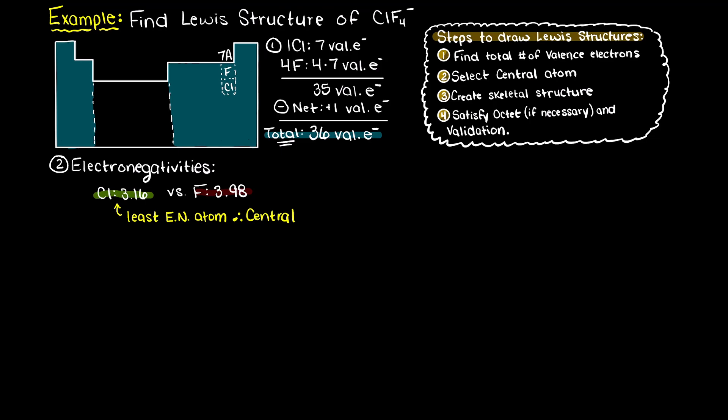Now that we know our central atom, we need to create a skeletal structure for the compound. Let's place our chlorine atom in the center and our 4 fluorine atoms all around our chlorine, and add in our valence electrons for each atom. Now let's place in our relevant covalent bonds and connect all our atoms.